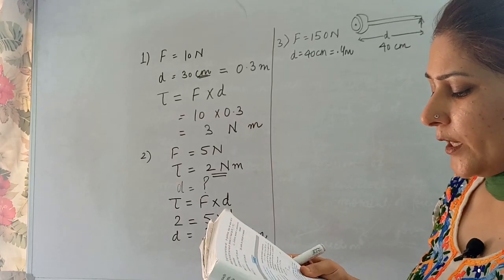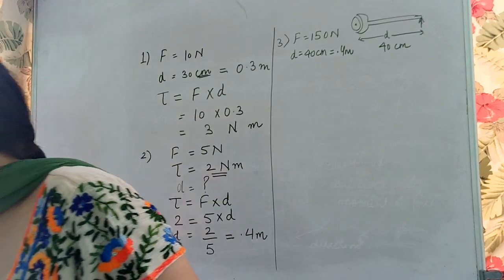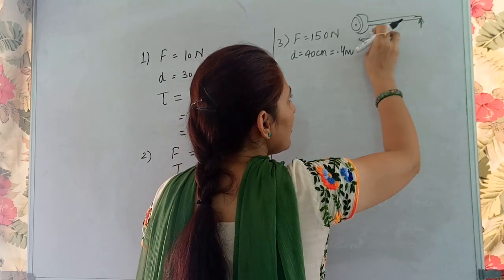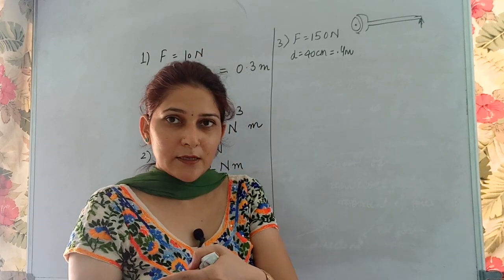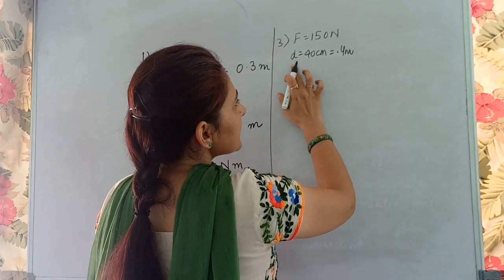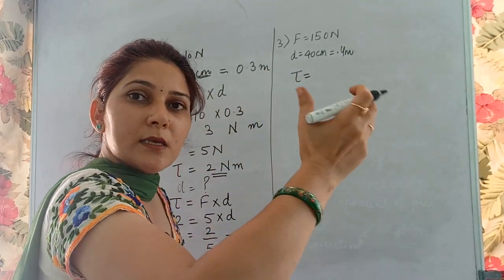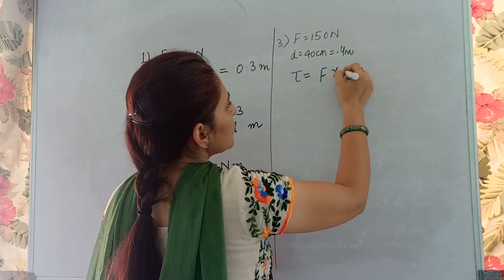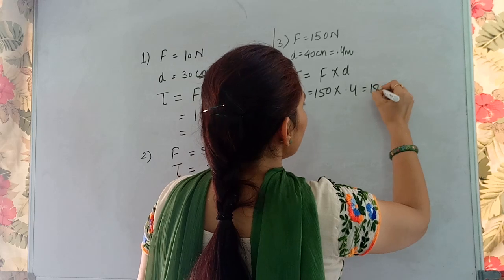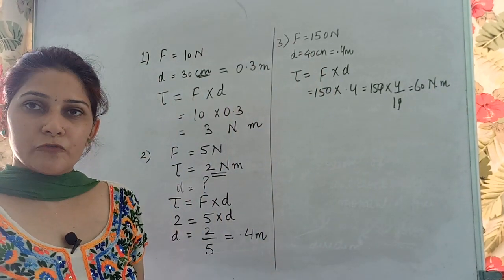They then ask how long a handle is required if the mechanic wants to open it by applying only 50 newtons. First, let's calculate the turning effect when 150 newtons is applied at 0.4 meters: torque = 150 × 0.4 = 150 × 4/10 = 60 newton meters. This is the turning effect needed to open the nut.